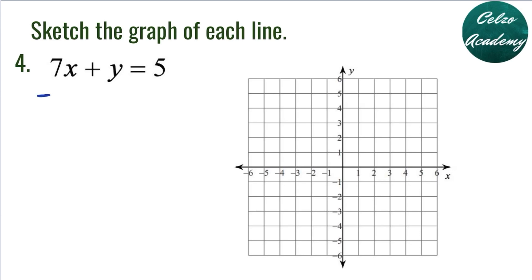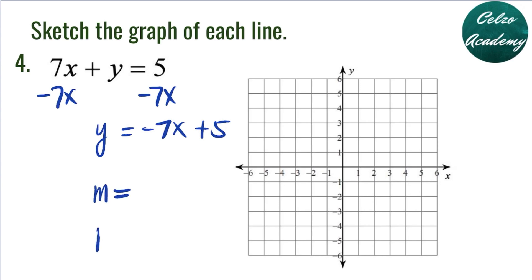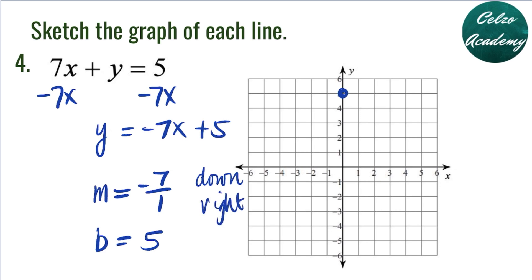We now have Y is equal to negative 7X plus 5, which is in the form Y equals MX plus B. The Y-intercept is 5 and the slope is negative 7, or negative 7 over 1. To graph this, we begin with the Y-intercept 5. From 5, we graph the slope negative 7 over 1, which means 7 down and 1 to the right. Connect the two points to draw the line — this is the graph of Y equals negative 7X plus 5.